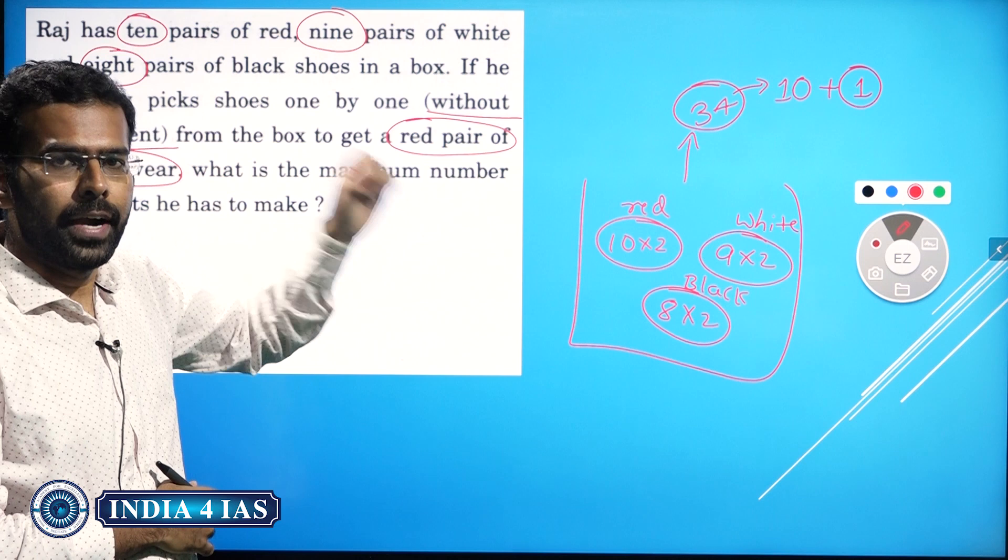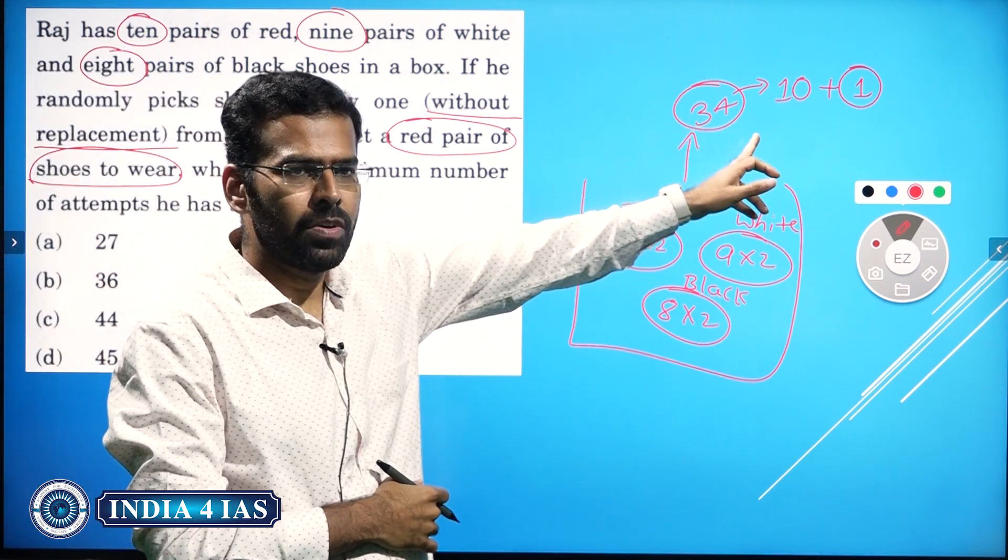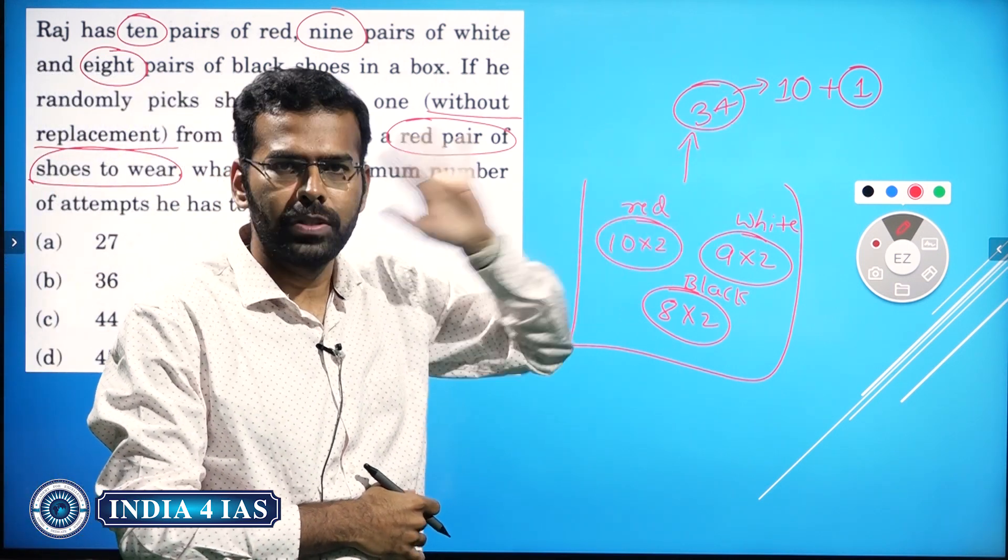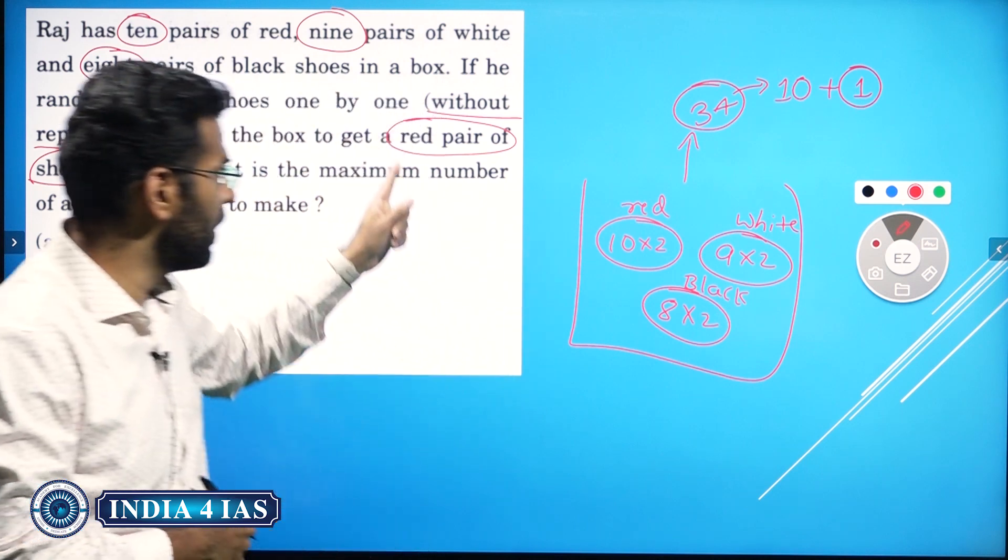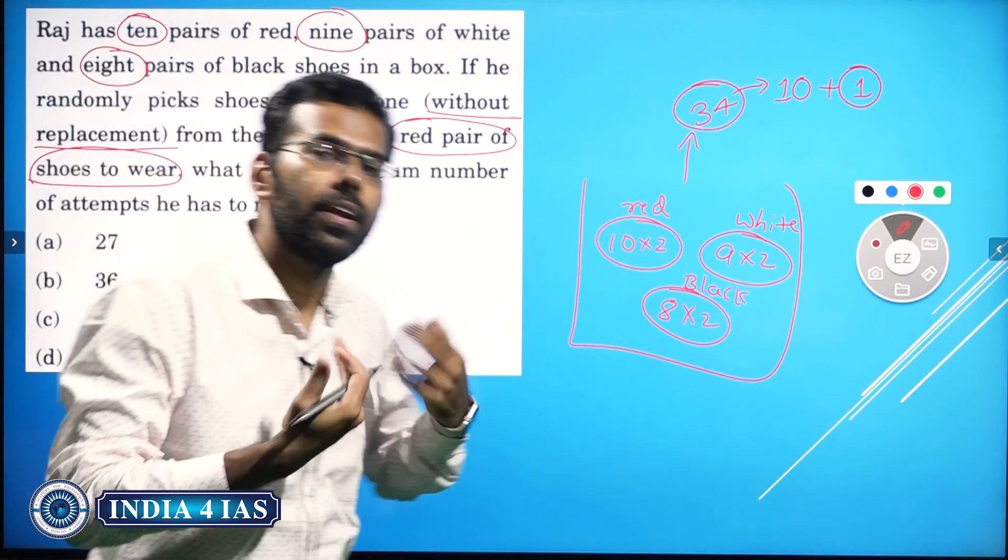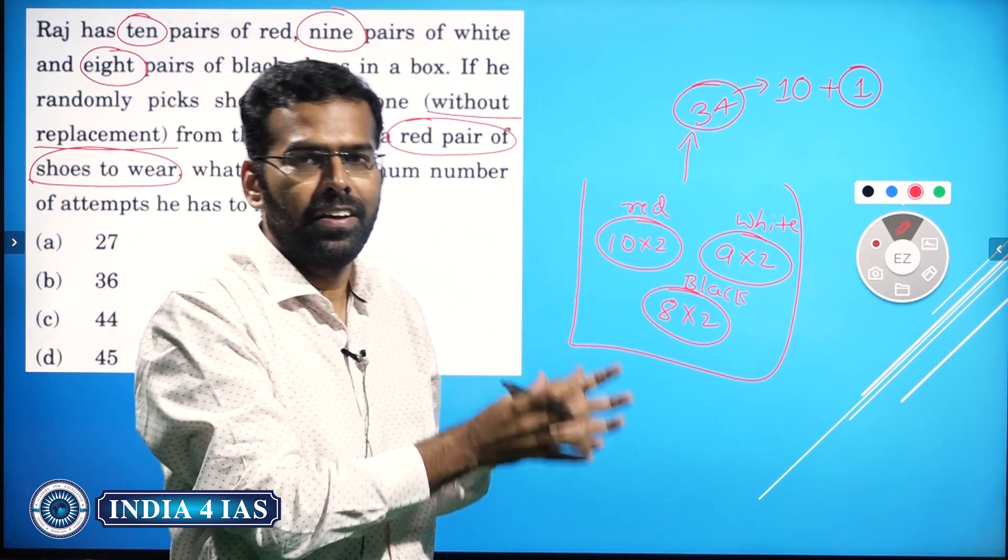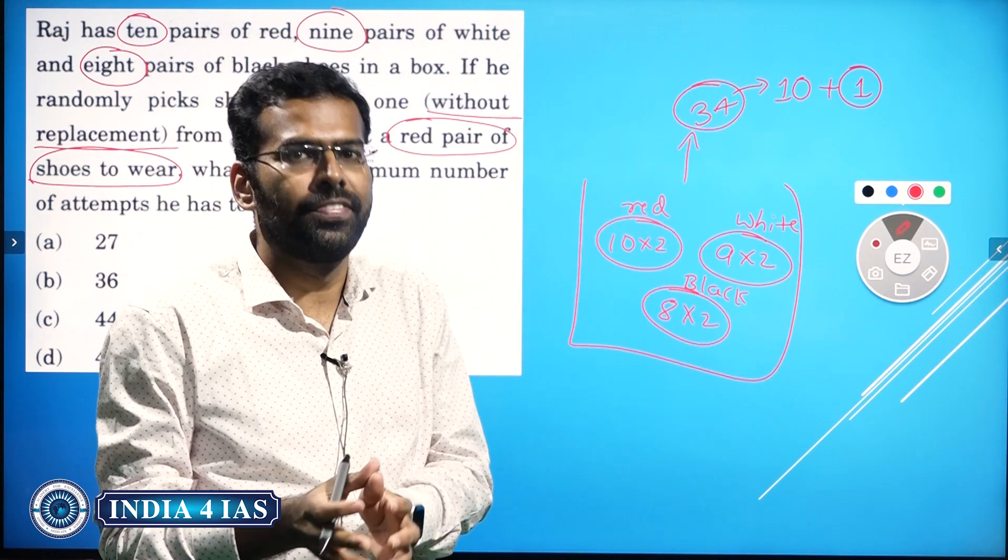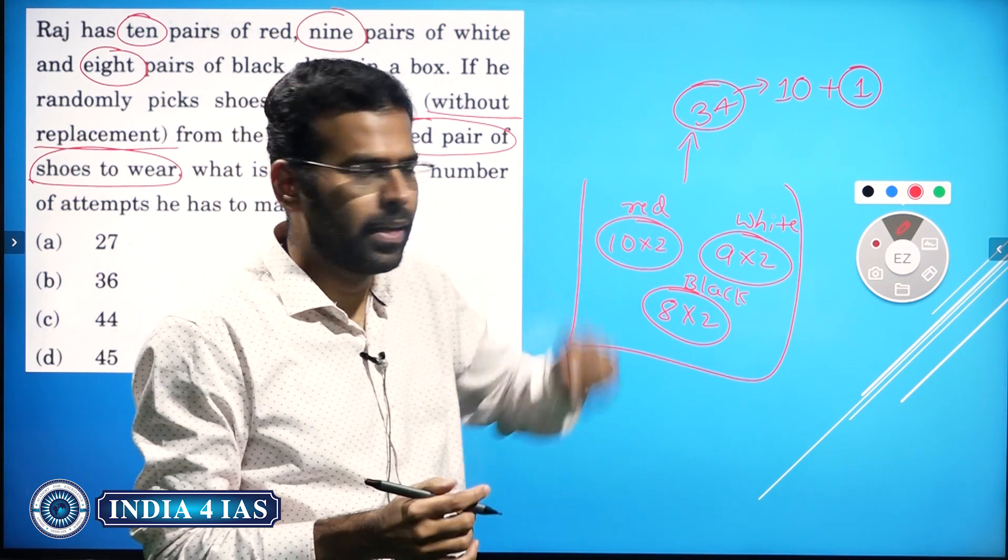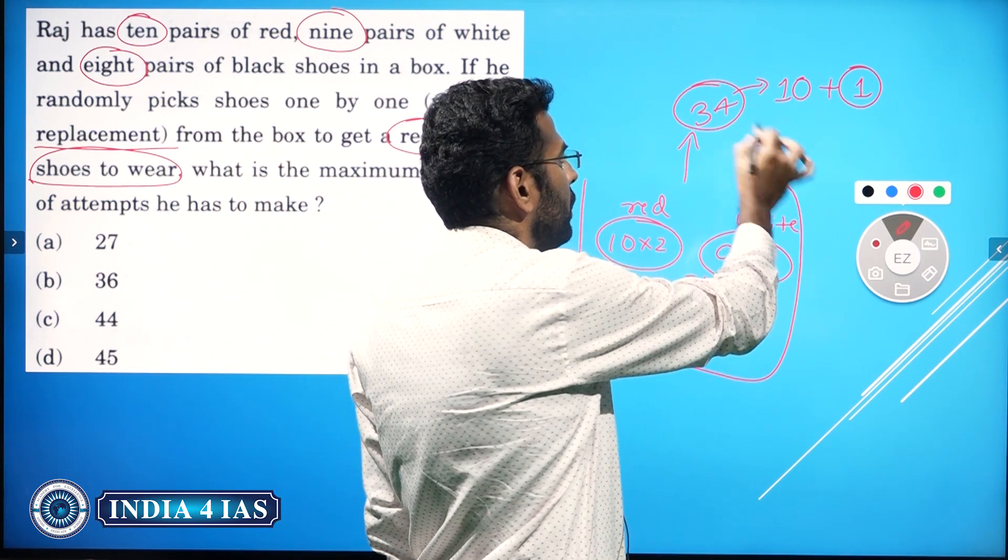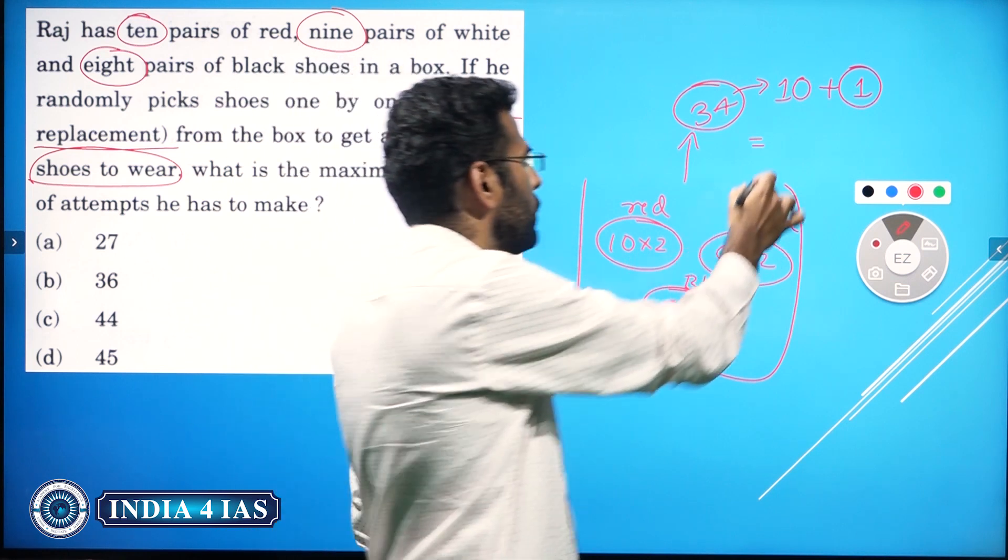If they just give 'one red pair of shoes,' then your answer will be 34+2=36. But here he is saying 'red pair of shoes to wear' - that means you have to get one right and one left leg shoes of red color. That means your answer will be 34+10+1, which will be 45.